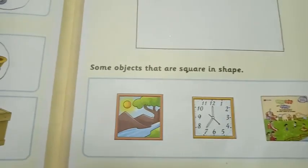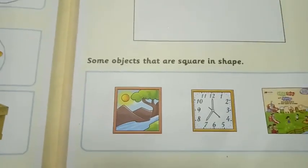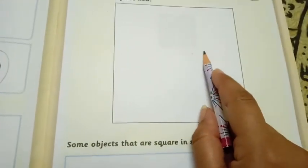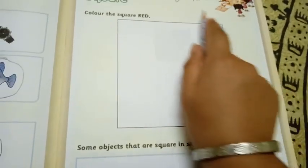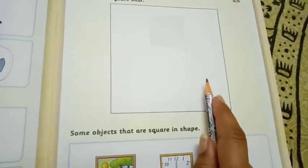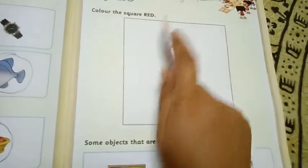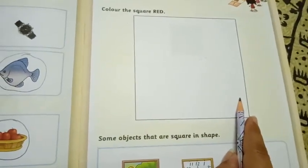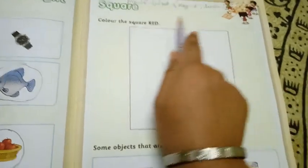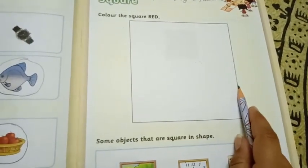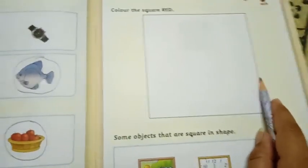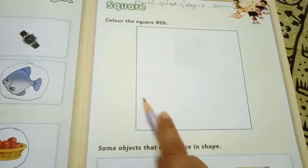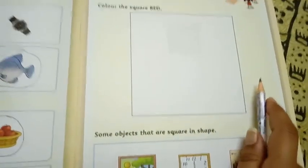So, children. Have you understood? Yes. So, the name of the shape is square shape. And this shape has got sides and corner. Four sides are there. And four corners are there. And all the sides of the square are of the same length. So, all the sides are equal. And it is square.